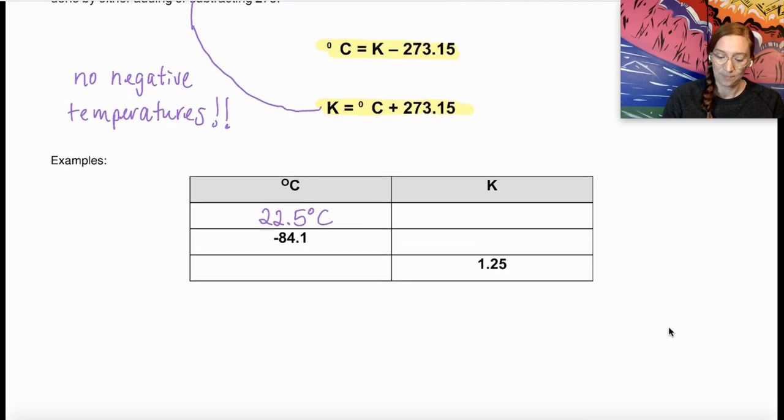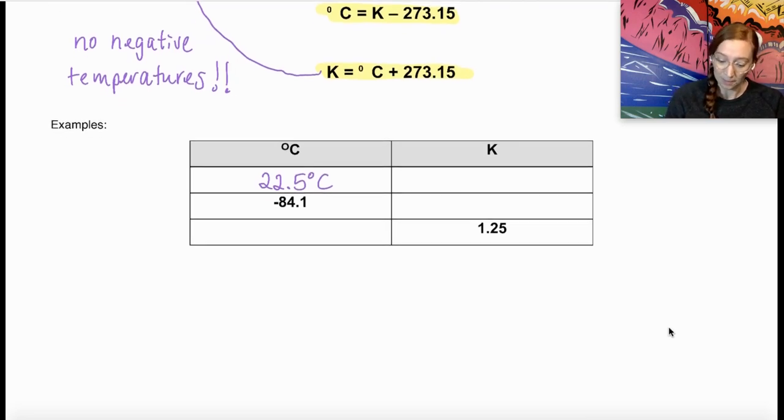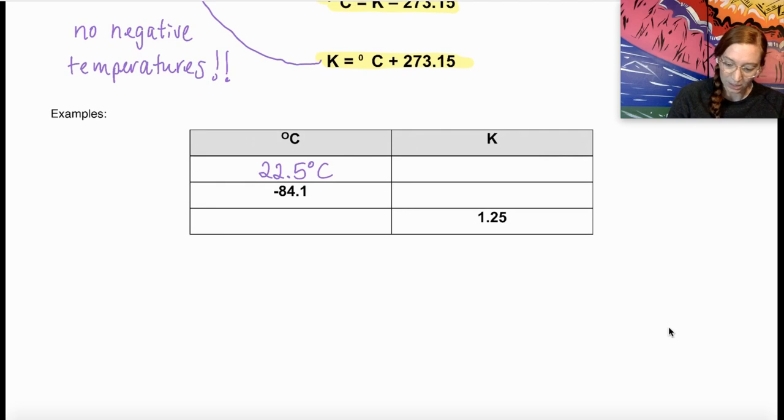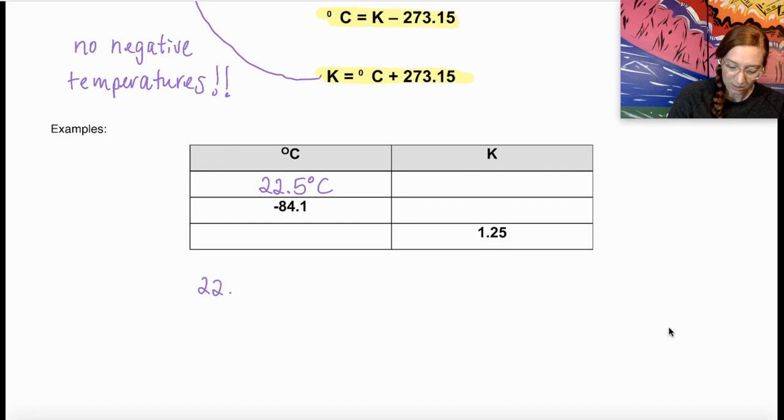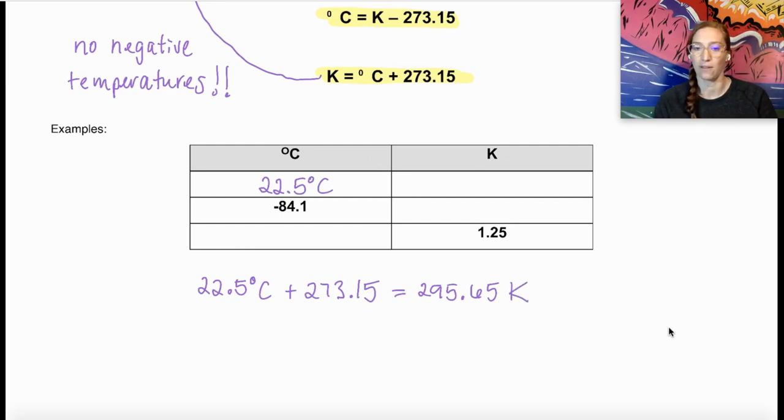All we're going to do here is change this into Kelvin. We're going to use that conversion by taking our degree Celsius, which is 22.5, and we're going to add 273.15. I'm going to go ahead and do it in my calculator. This is going to give me 295.65 Kelvin. Notice there is not a degree sign. It's just a capital K for Kelvin.